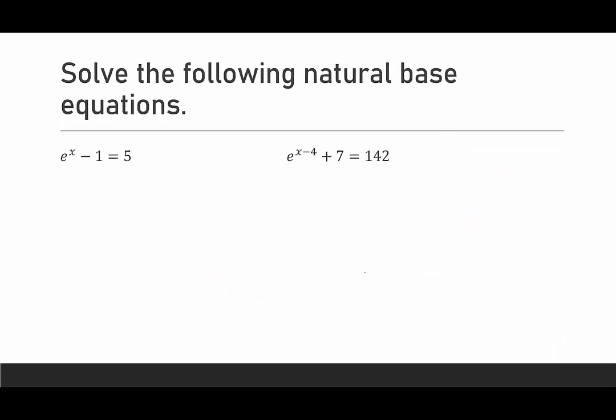Two more examples. In the first example, I want to get that e^x by itself, so add one to both sides. I get e^x = 6. Now, to get x out of the exponent, I'm going to take the natural log of both sides, and this would leave me with x. So I end up with x equals ln of 6, and that means that x is approximately 1.792.